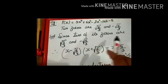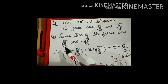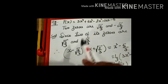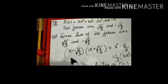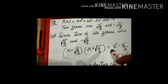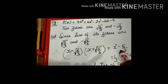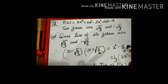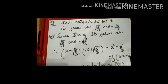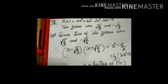Since two zeros are √(5/3) and -√(5/3), their factors are (x - √(5/3)) and (x + √(5/3)). Using the identity (a - b)(a + b) = a² - b², the root cancels and we get 5/3 remaining. Taking 1/3 as a common factor outside, we get 3x² - 5, which becomes a factor of p(x).